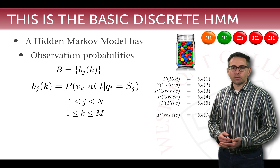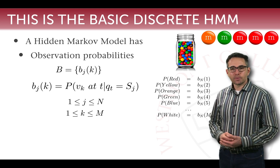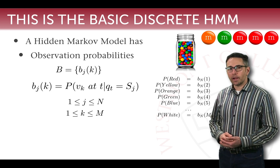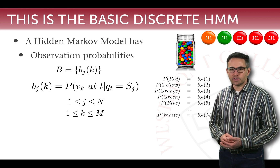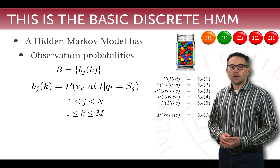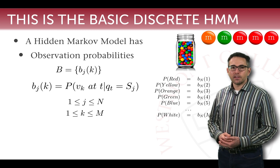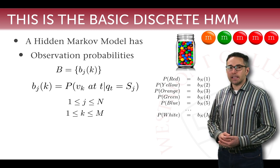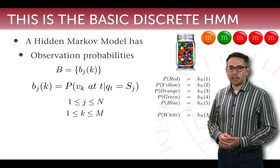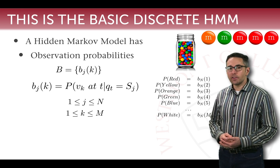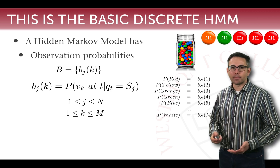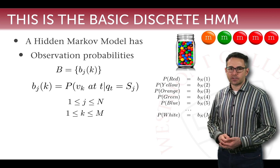Orange, green, red — those represent the observations, although we don't know which state generated them, so we can't say very much about the transition through states just from these observations. A Markov model needs to know the number of states, the vocabulary, the probability of moving from one state to another (state transition matrix), and the probability of generating a particular observation when in a particular state.